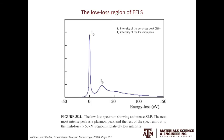This image shows a standard EELS spectra. I0 is the intensity of the zero loss peak, and IP is the intensity of the plasmon peak. The scale along the y-axis is linear — in the previous video, the scale was log. The low loss region of the EELS spectrum is shaded in blue, and it covers the zero loss peak and the plasmon peak.